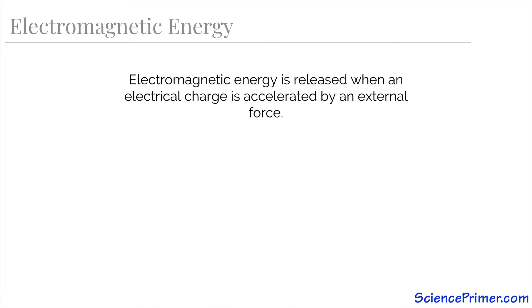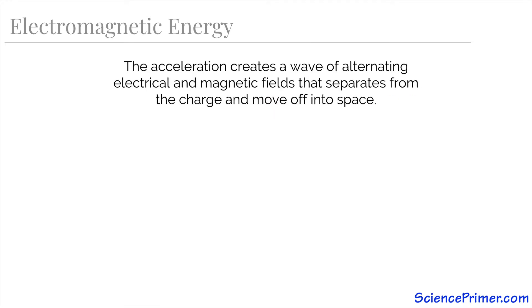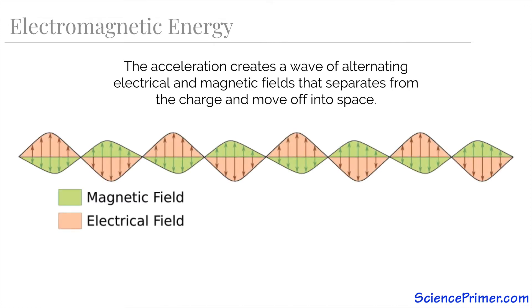Electromagnetic energy is formed when an electrical charge is accelerated by an external force. The acceleration of the electrical field creates a wave of alternating electrical and magnetic fields that separate from the charge and move off into space.